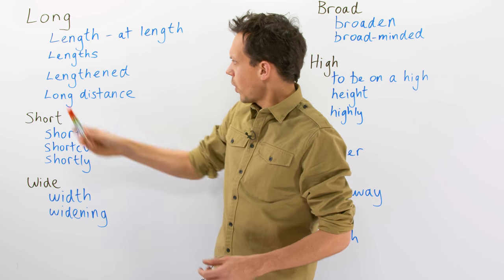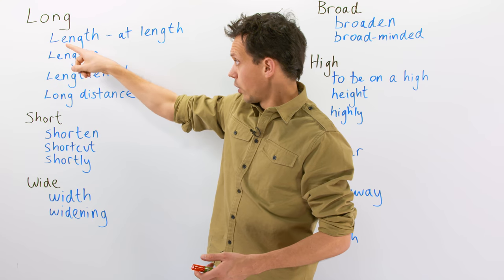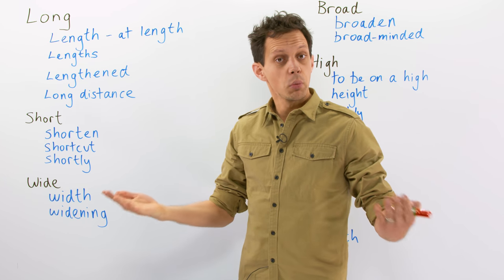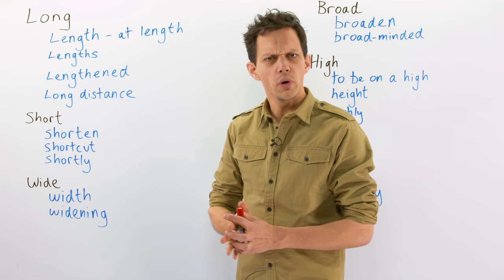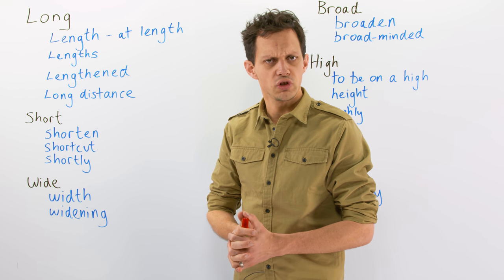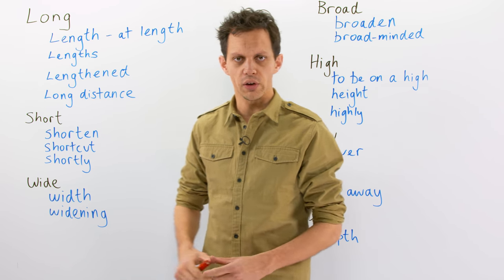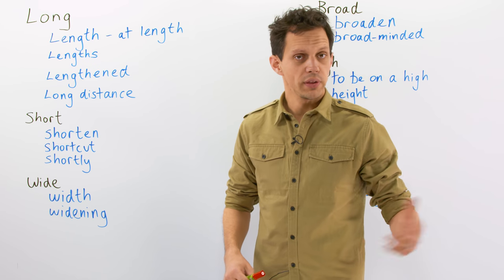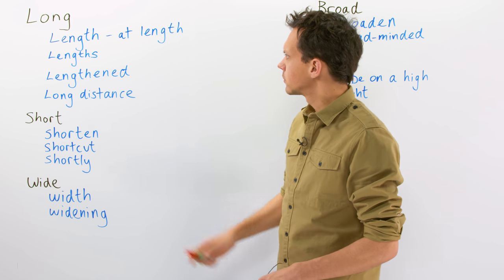Length. There are different ways in which I can use this word, long. Firstly, length. Someone might ask me, 'Benjamin, what has been the length of your relationship?' — i.e., how long have I been going out with the girl for? Well, the answer: a couple of months. Two months, maybe.